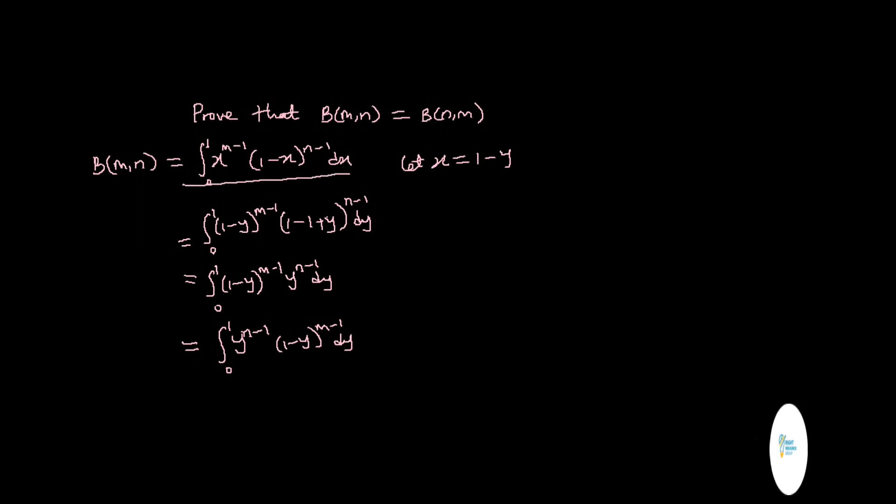In comparing these two now, you'll see that this and this are the same. So this is B(N,M). Therefore, B(M,N) is equal to B(N,M).